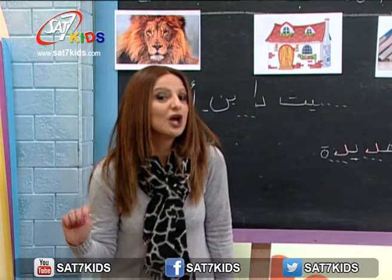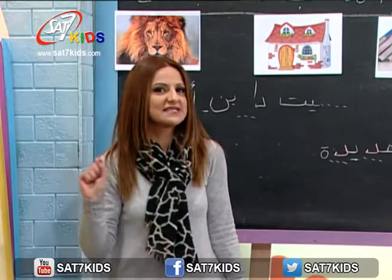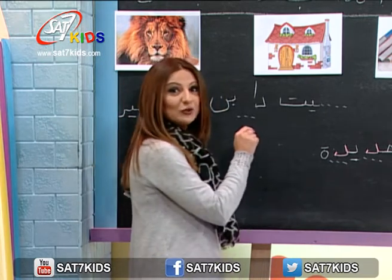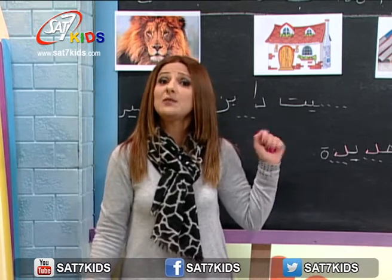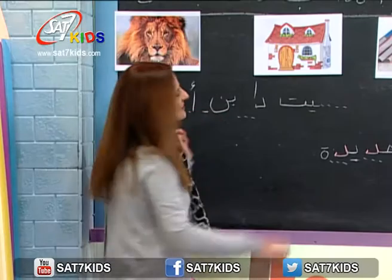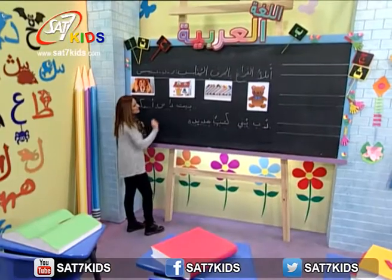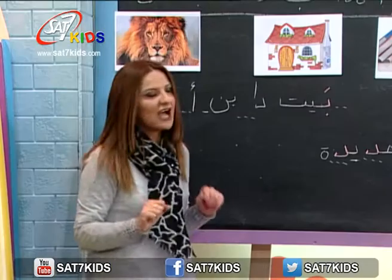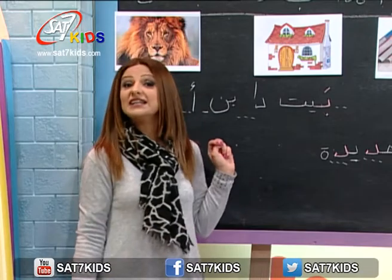شو بسمع بأول كلمة بيت؟ بسمع حرف الباء مع الصوت القصير أ. بكتب حرف الباء كيف؟ بأول الكلمة، حرف متصل من جهة واحدة. وبحط الصوت القصير أ يعني الفتحة.